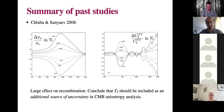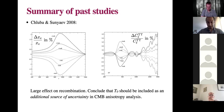Let me tell you about previous works that tried to vary T0. In 2008, Fixsen and Sunyaev varied the CMB monopole. On the left you see the fractional change in the free electron fraction as a function of redshift when you keep all other cosmological parameters fixed — they find a huge effect on recombination. On the right, this effect is propagated to the CMB anisotropy power spectrum. Their conclusion was that T0 should be included at the very least as an additional source of uncertainty in CMB anisotropy analysis.